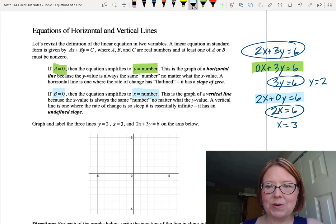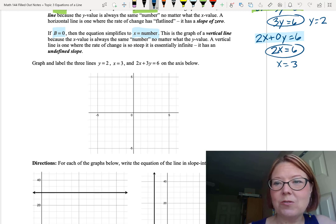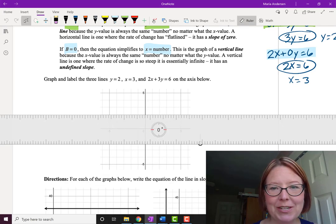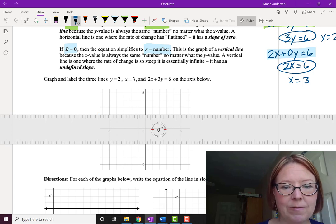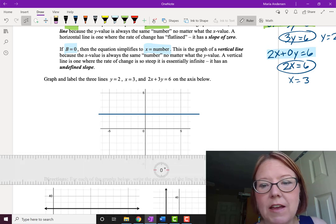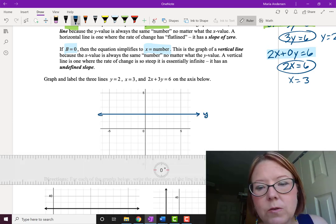Let's go ahead and graph these three lines on the axis below. We'll start with that horizontal line at y equals 2. My y value is always 2. I'm going to pull out my trusty ruler here and go ahead and draw that graph. y equals 2. The y value is always 2. So that is the line, y equals 2, a nice horizontal line.